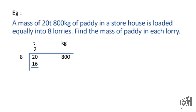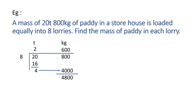In 20 divided by 8, you have 2 eights as 16; when you subtract you get 4 remaining. This remaining 4 we take to the kilogram side as 4000 kilograms, because in 4 tons you have 4000 kilograms. Now we take the sum on the kilogram side: it is 4800. We divide 4800 by 8 — in 4800 you have 600 eights — and here we conclude the division using method one.